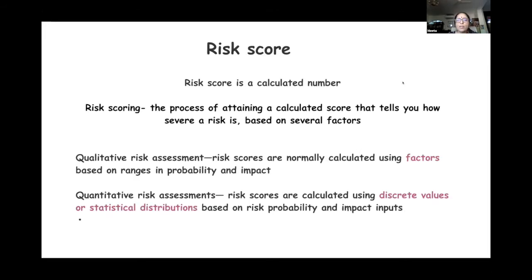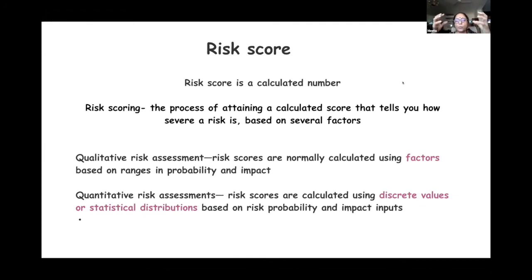A risk score is a calculated number. Risk scoring systems retain calculated scores based on several factors. These risk scoring charts can be qualitative or quantitative. Qualitative risk assessments are based on certain factors and are more subjective, whereas quantitative risk assessments are based on values derived from statistical distributions of risk probability and impact inputs, giving more meaningful and better assessments.